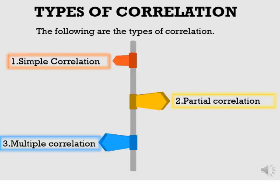Correlation is classified into three types: simple correlation, partial correlation, and multiple correlation. Simple correlation is the relationship between two random variables. For example, price and demand of a commodity, income and expenditure of a family.